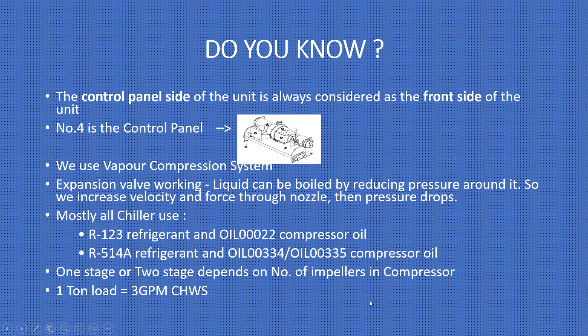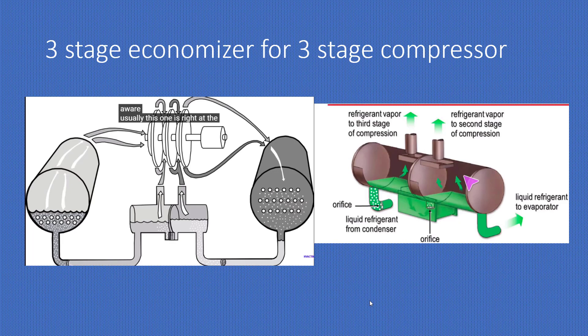The control panel side of the unit is always considered the front side. We use a vapor compression system — expansion: working liquid can be boiled by reducing pressure around it, so we increase velocity and force through a nozzle, then pressure drops. Most of these chillers use R123 refrigerant and oil 00022 compressor oil; in some cases R514A refrigerant is used with its corresponding compressor oil. Whether one-stage or two-stage depends on the number of impellers in the compressor and the load. Three GPM chilled water flow is the measurement for one ton of cooling load. For a three-stage compressor, the economizer will also have three stages — you can see one, two, and three stages here with orifices; liquid refrigerant from the condenser goes inside the economizer and refrigerant vapor goes to the second stage of the compressor.